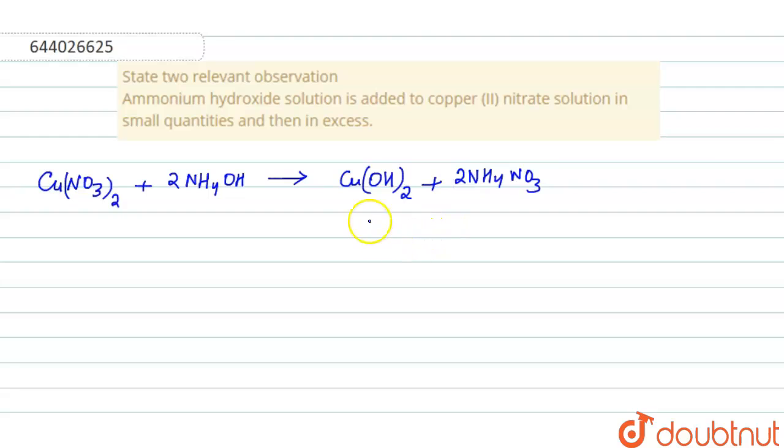And then for excess, we have to take the product that is formed here, that is Cu(OH)2. Cu(OH)2 when it reacts with NH4OH - now this is excess - will give us [Cu(NH3)4](OH)2 plus water. If we balance, we write here 4 and balance...